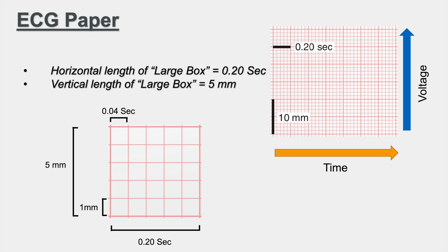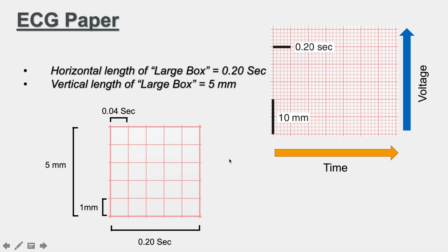Taking an even closer look at the small boxes, each small box along the horizontal axis denotes 0.04 seconds of time — five of these add up to 0.2 seconds. The vertical height of each small box denotes one millimeter. This is very important because we use this to calculate things like left ventricular hypertrophy or left atrial enlargement, and we use the horizontal measurement to check if the PR interval is prolonged.